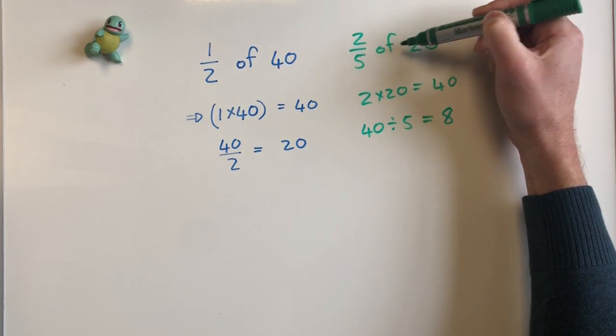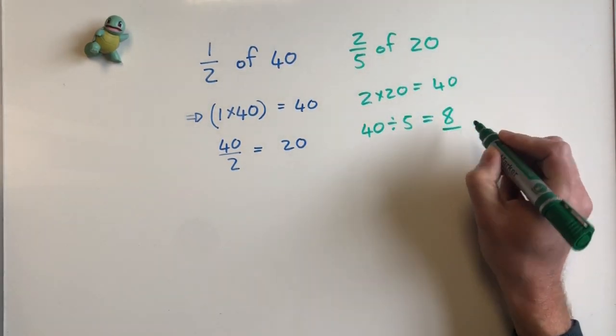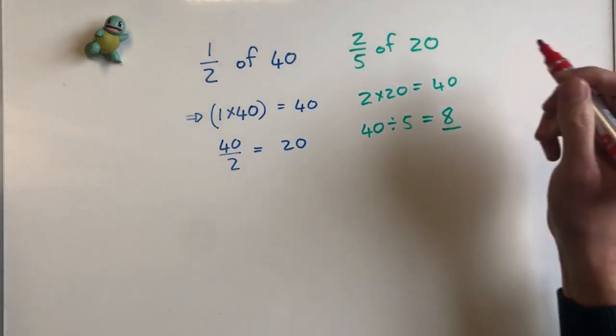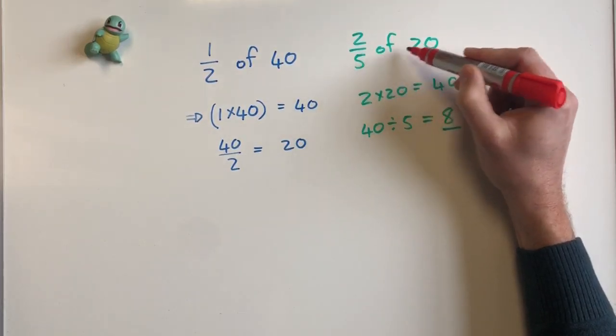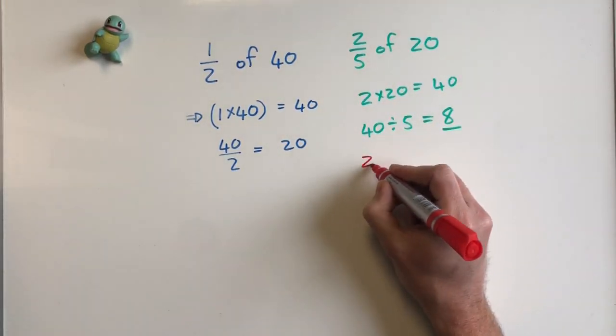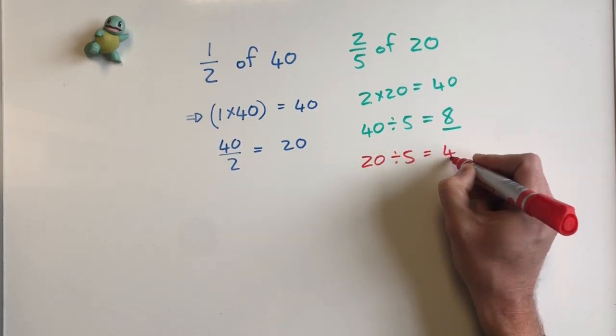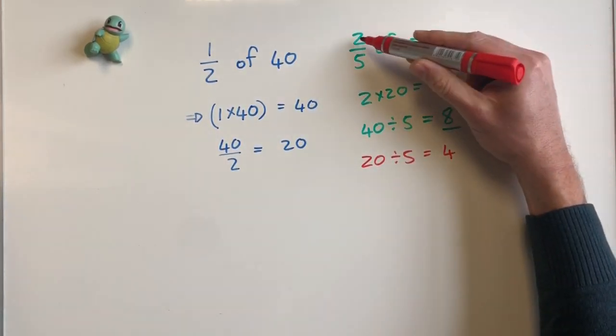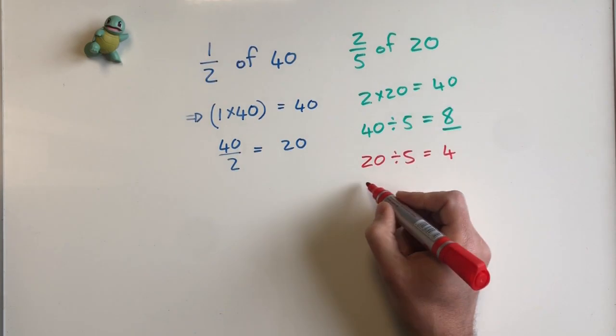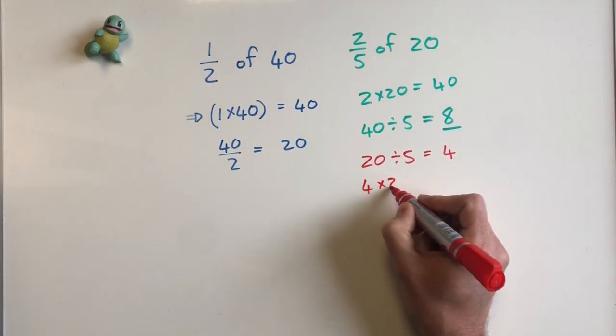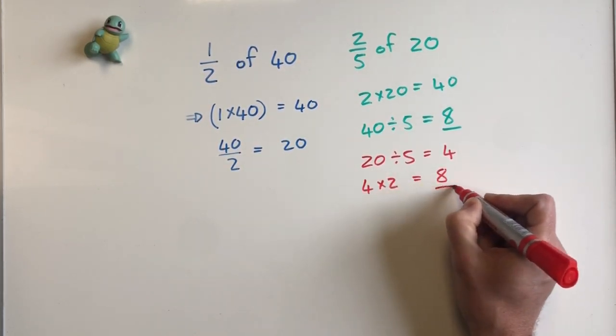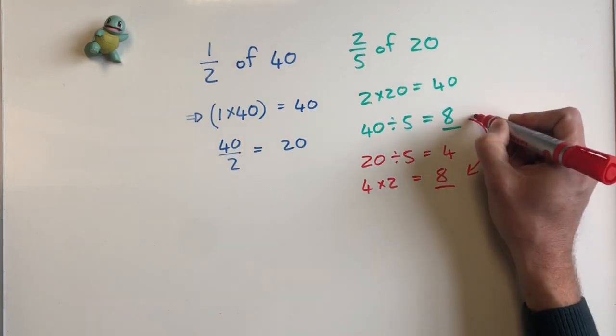And then we take the 40 and divide it by 5, and 40 divided by 5 is 8. So I know two-fifths of 20 is 8. I could have done it the other way around. I could have said divided by 5 first, so 20 divided by 5 gives me 4, and then multiply by 2, so 4 times 2 would be 8.